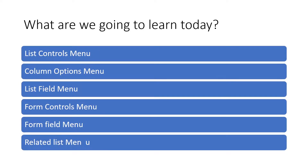Today everything will be done in demo. We'll discuss the context menu — what different menus are available in ServiceNow and what their functions are. We'll cover the list control menu, column options menu, list field menu, form controls menu, form field menu, and finally the related list menu. Let's go to ServiceNow and start.